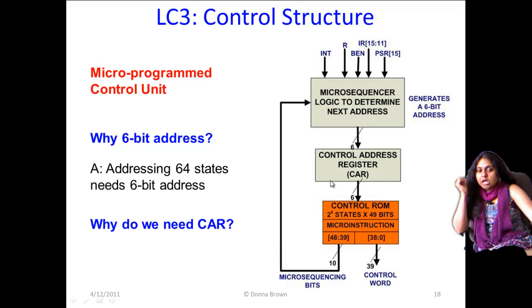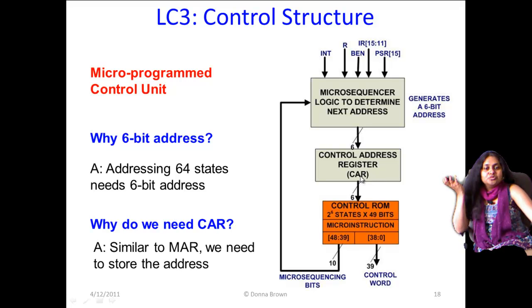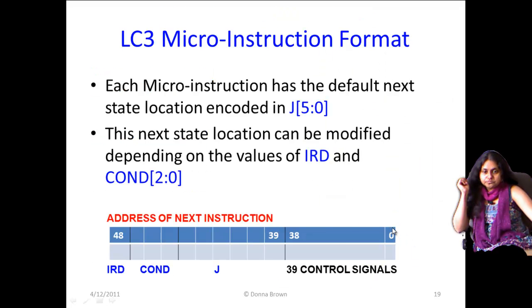There is also another entity called the control address register. What is the control address register or the CAR? The control address register is basically just a place where you store the memory addresses of the control ROM. Its operation is self-explanatory—just as the memory address register which addresses the locations inside the memory, the control address register addresses the locations inside the control ROM.